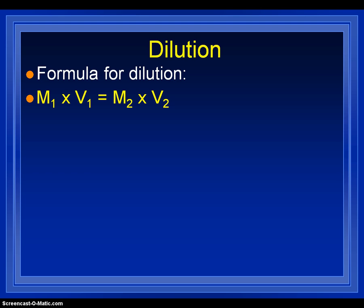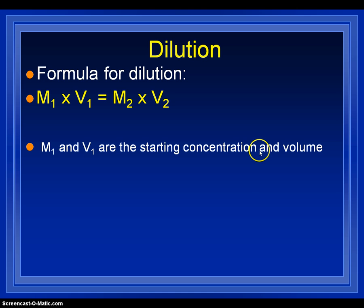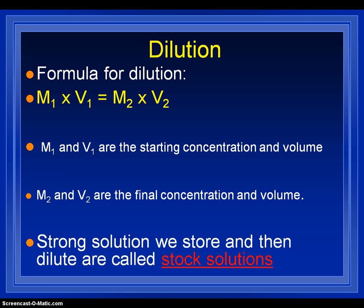So, if we want to calculate a dilution, it's a very simple equation, and remember that these equations are all in your reference tables. So, it's just molarity times volume equals molarity times volume. M1 and V1 are the starting concentration and volume, and M2 and V2 are the final concentration and volume, what you have.